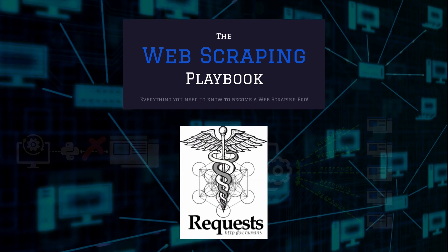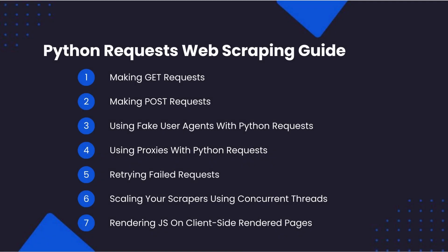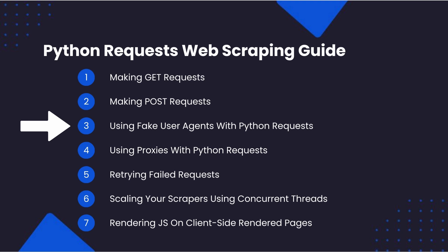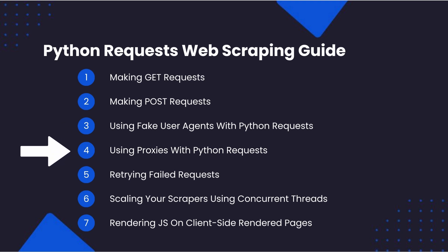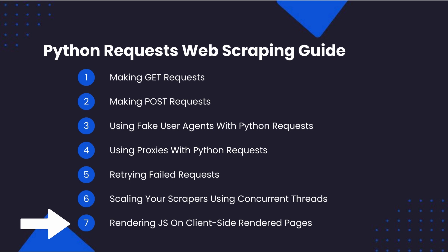Python Requests is the most popular HTTP client library used by Python developers. In this article we will run through all the best practices you need to know, including making GET requests, making POST requests, using fake user agents, using proxies, retrying failed requests, scaling your scrapers using concurrent threads, and rendering JavaScript on client-side rendered pages.